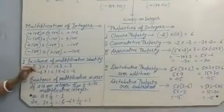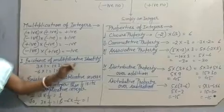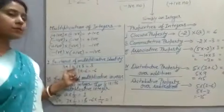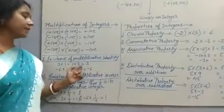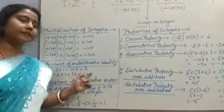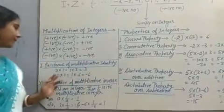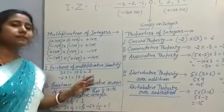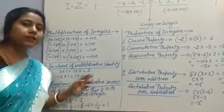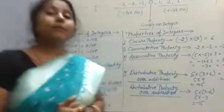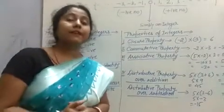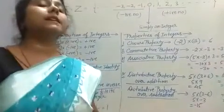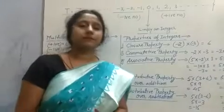The fifth property is the existence of multiplicative identity. For example, 3 into 1 equals 1 into 3, that is 3 only. And minus 6 into 1 equals 1 into minus 6, which gives minus 6. This means 1 is the multiplicative identity — if we multiply any integer by 1, the same integer comes back.